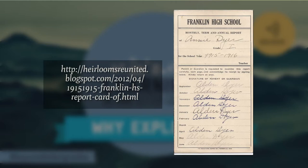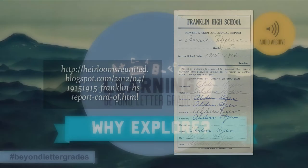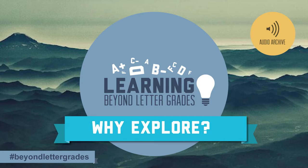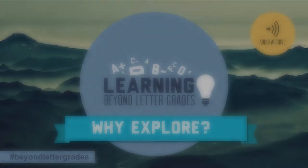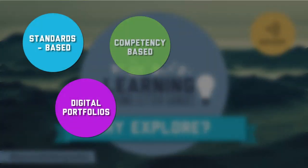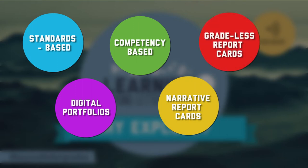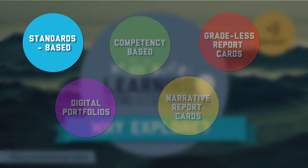As we think about today and report cards, we have many new possibilities that people are considering. I offer five to think about. One is standards-based, where you might have a list of the standards students are expected to meet on the actual report card and then document their progress as it relates to each standard. This has the ability to give much more detail than a letter grade report card — with a letter grade we don't necessarily know which part of the class the student did well in and which part they did not.